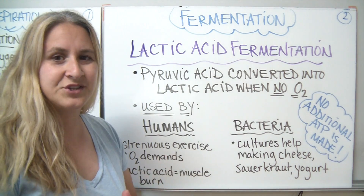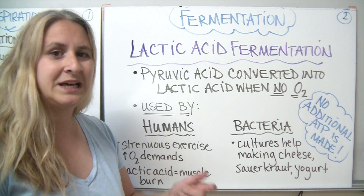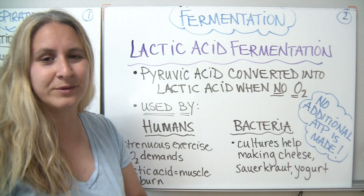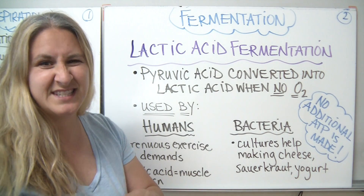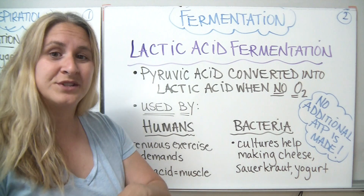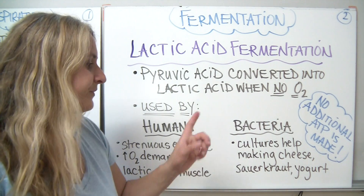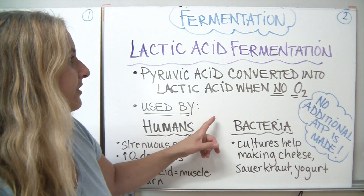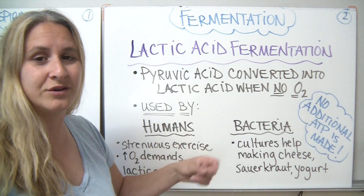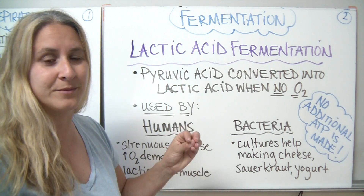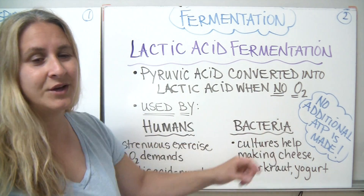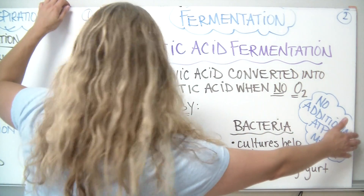Once there's enough oxygen in the body and you've recovered a little bit, that lactic acid can go back into our chemical reactions and be used again — taking the energy stored in it and feeding into the aerobic phase later on. The key thing to understand is that during lactic acid fermentation, or any type of fermentation, the only ATP that gets made is during glycolysis. We don't make any additional ATP here.